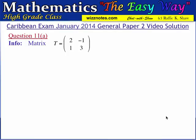We are now at question 11, our last question of this CXC CSEC January 2014 general paper 2 exam video solution. Part A of this question gives us the matrix T equals [2, -1; 1, 3], and the first part wants us to calculate the inverse matrix T to the minus 1, that is the inverse of this matrix.